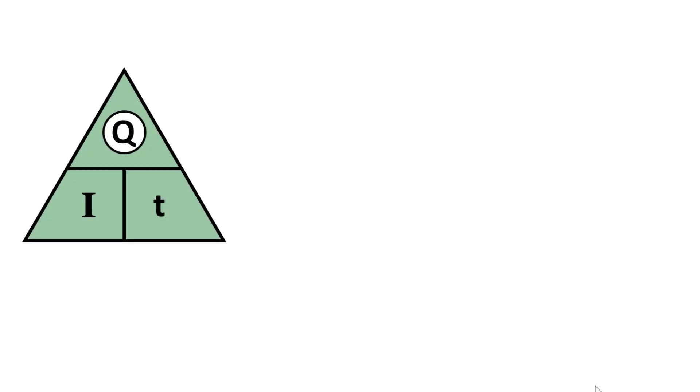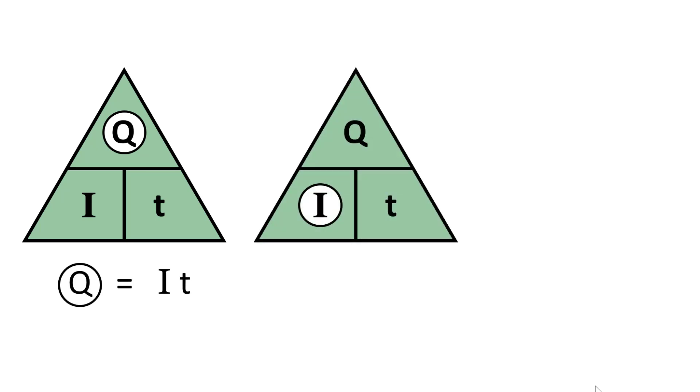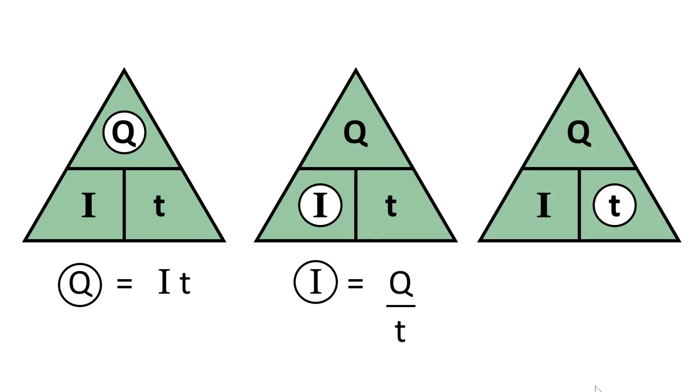We can also use a triangle like this. Charge Q is I times t. Current I is Q over t, and time t is Q over I.